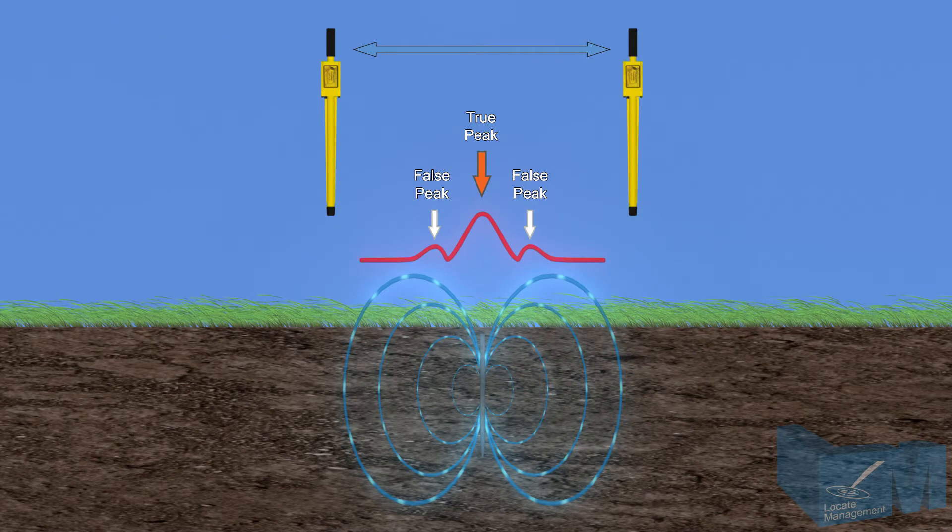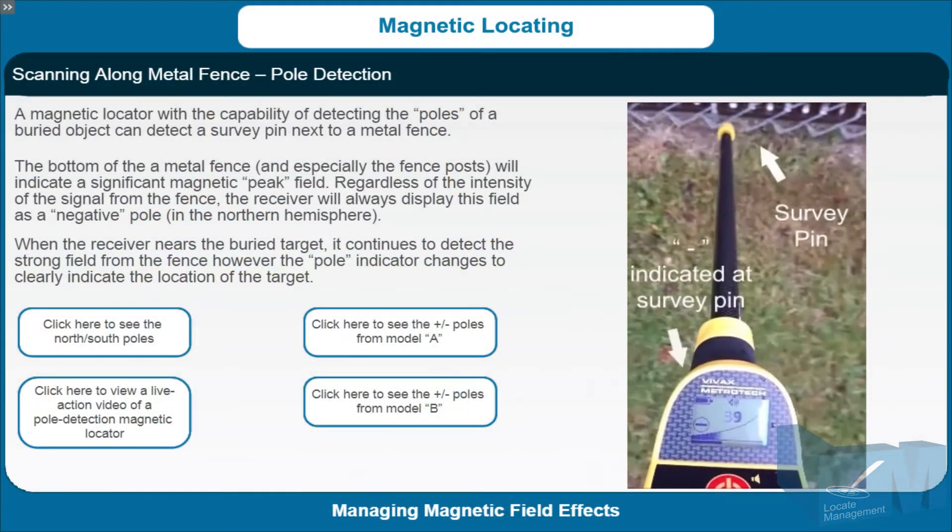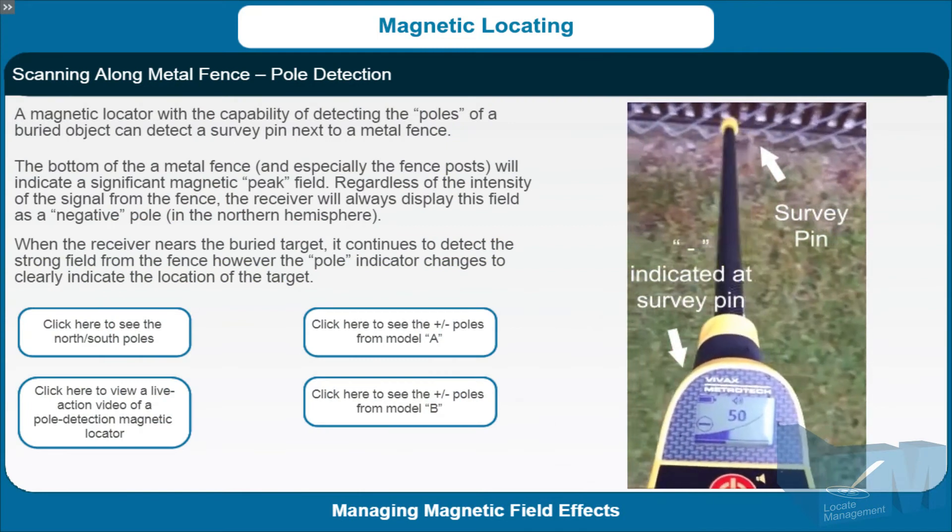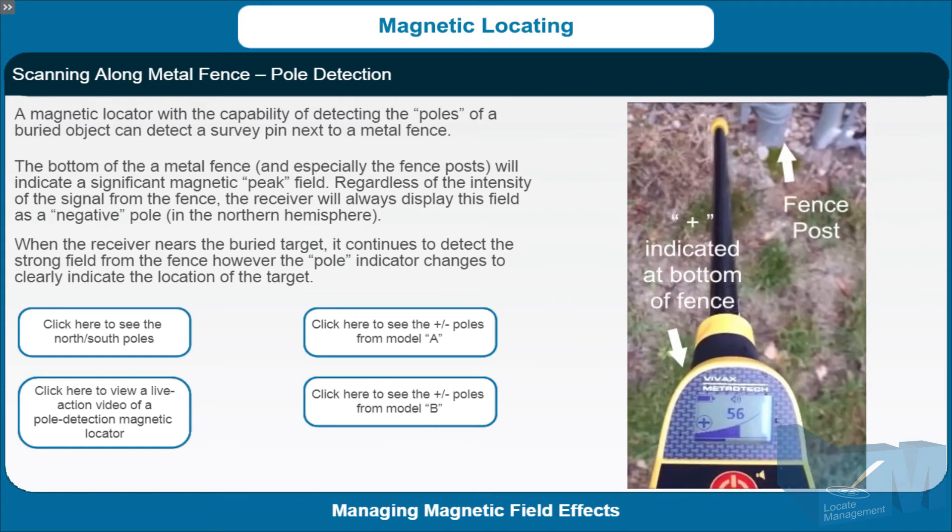By taking this course, a student will gain knowledge of magnetic fields and magnetic locating, magnetic receiver operations, identifying and managing magnetic field effects, procedures to detect common objects, and procedures to detect challenging objects.